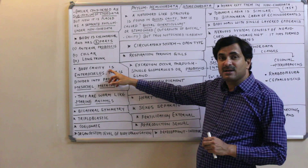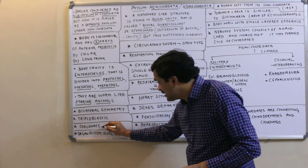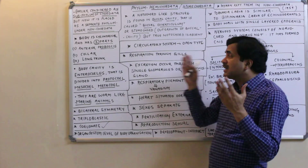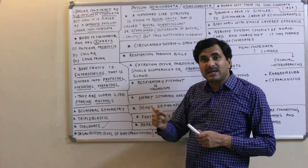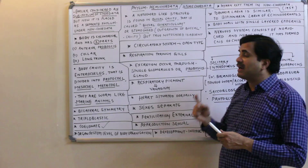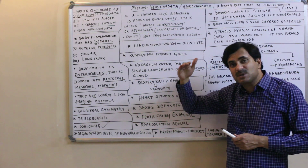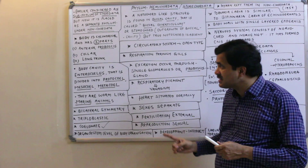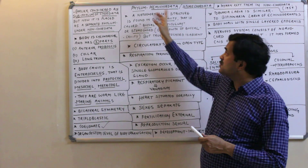Regarding body cavity, they are coelomate organisms with a true coelom. The true coelom in them is of the enterocoelous type. This enterocoelous cavity is divided into three parts: the protocoel, mesocoel, and metacoel.